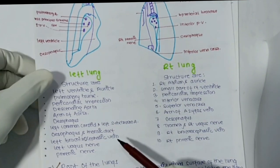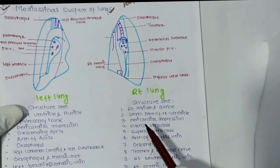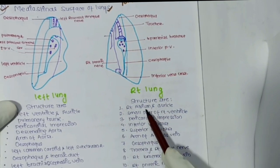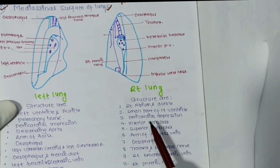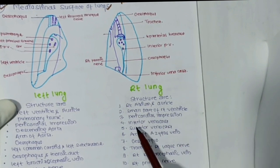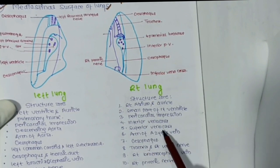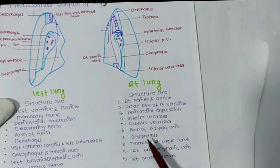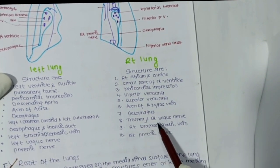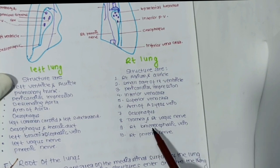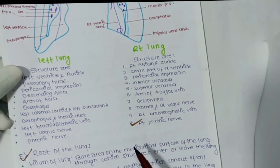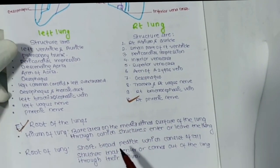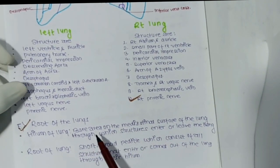In the right lung, structures on the mediastinal surface include the right atrium, right auricle, a small part of left ventricle, pericardial impression, inferior vena cava, arch of azygous vein, esophagus, trachea, right vagus nerve, right brachiocephalic vein, and right phrenic nerve.